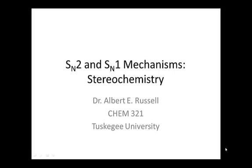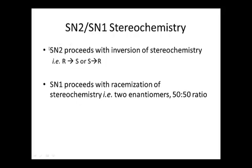This video discusses the stereochemical outcome of the SN2 and SN1 mechanisms. The SN2 proceeds with inversion of stereochemistry: if the stereocenter in the starting substrate is R, it becomes S in the product, and vice versa. The SN1 mechanism, on the other hand, produces a racemic mixture — two enantiomers in a 50/50 ratio.